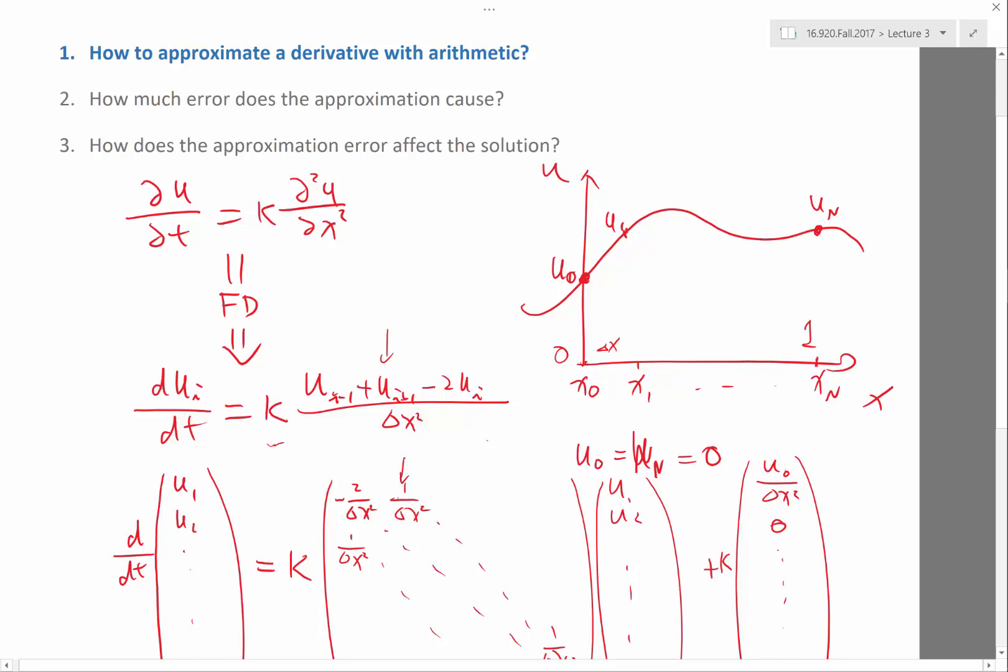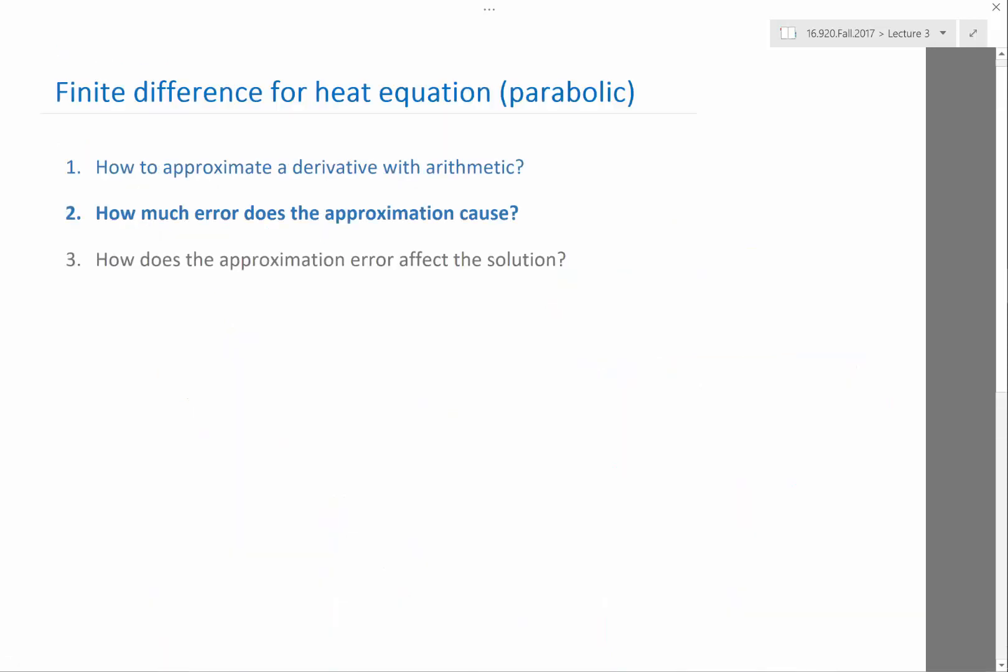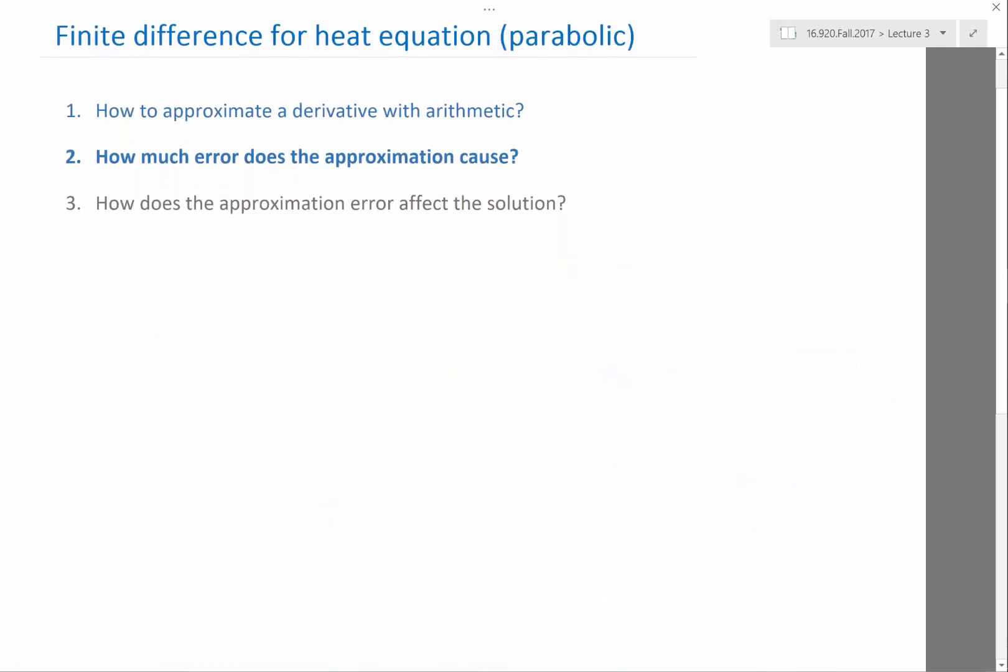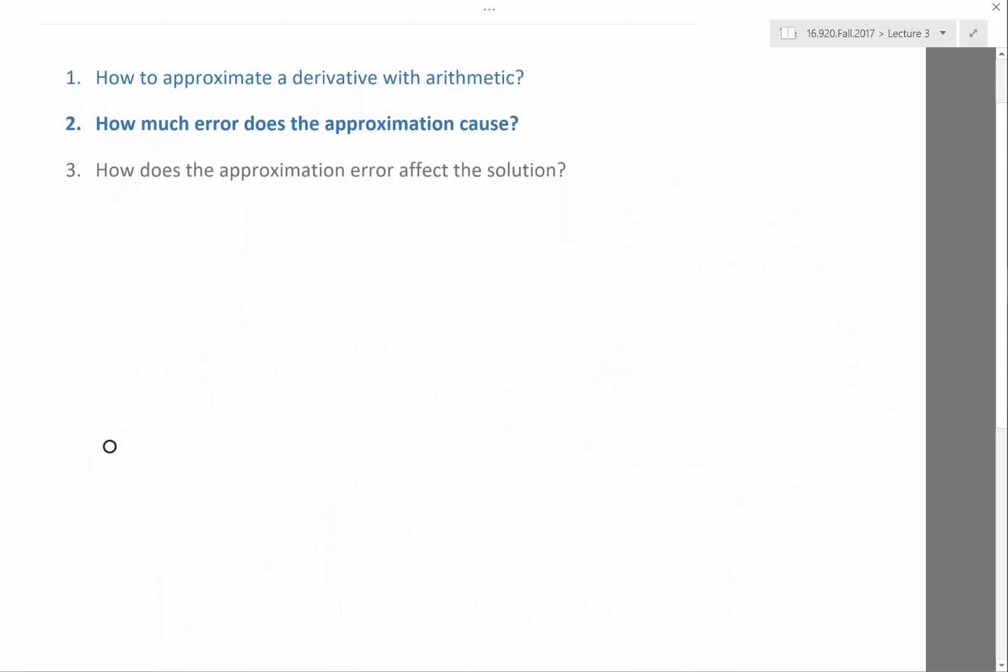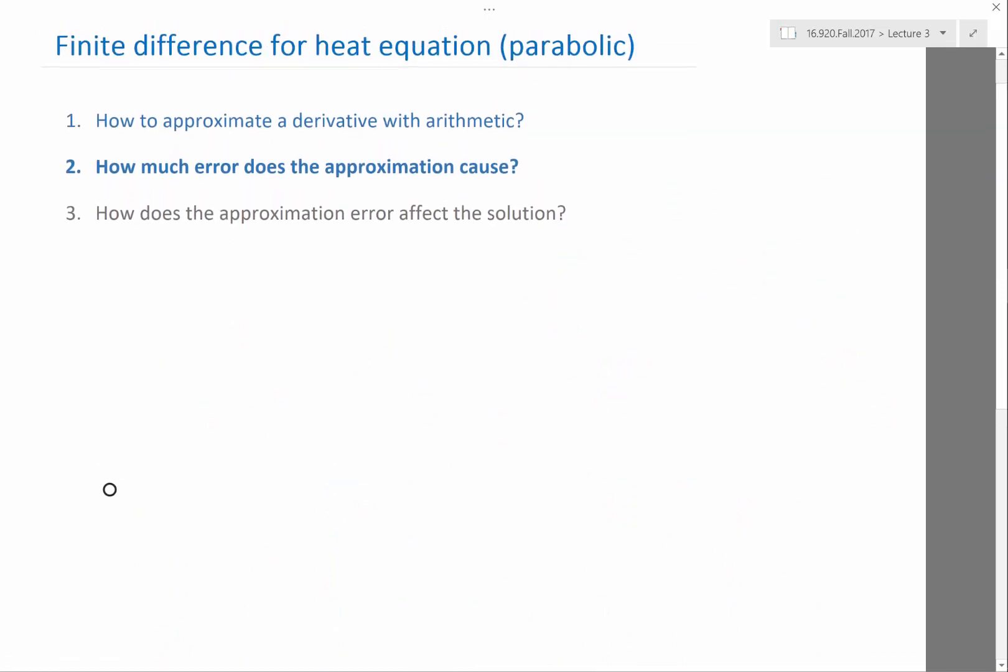And so, how can we analyze from a mathematical point of view how much error does the approximation cause? So, we can do that from using, again, Taylor series analysis. So, this time, in order for us to figure out how much error it causes, we have to keep a little bit more terms in the Taylor series.